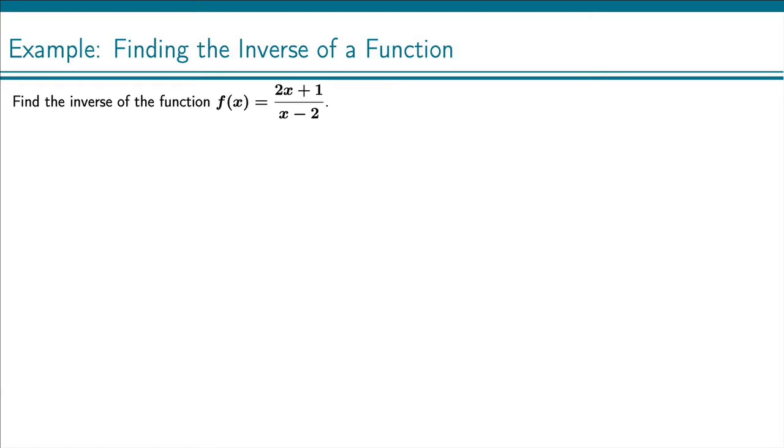Find the inverse of the function f of x equals 2x plus 1 over x minus 2. We start by setting y equal to our function 2x plus 1 over x minus 2.